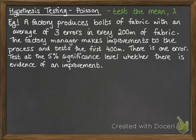Here's our example. We've got a factory that produces bolts of fabric with an average of three errors in every 200 metres of fabric. A factory manager makes improvements to the process and tests the first 400 metres, finding one error. We want to test at the 5% significance level whether there is evidence of an improvement.